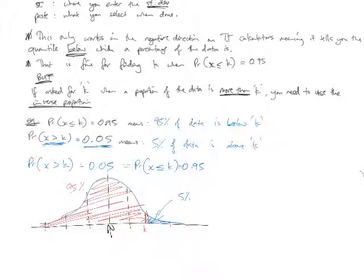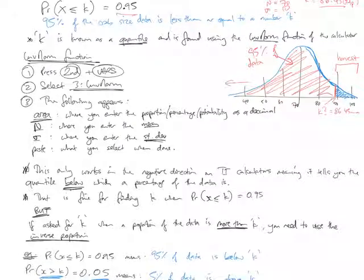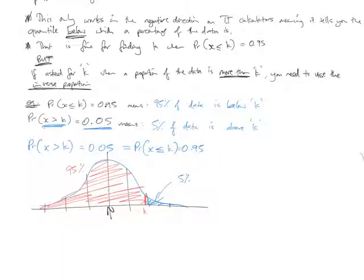So really the only things that you should get out of this video are how you access the inverse normal function. What is it doing? It's telling you the value below which a certain percentage of the data given in the question lies. And, if in the question you're asked for, what's the value going to be when a certain percentage lies, of the data lies above that value, well you just need to find the inverse proportion of that which is going to be a hundred percent take away whatever that percentage was above it. Because the graphics calculator, the TI calculators only work in the negative direction.